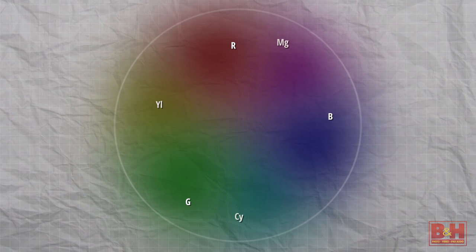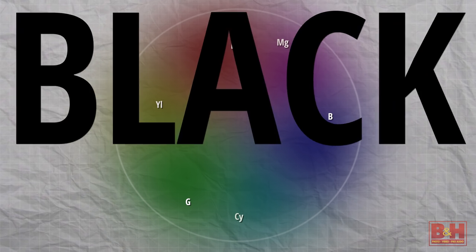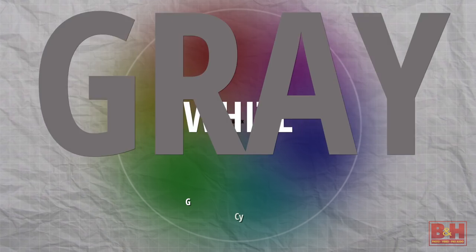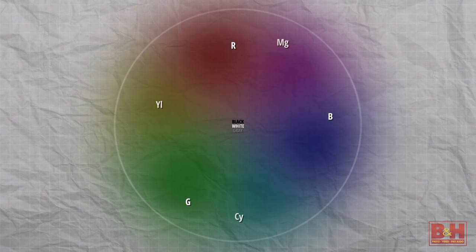Black, white, and neutral grays will be smack dab in the center at zero, as they have no color to them. Colors reaching the outer targets are at 100 saturation and outside of broadcast limits.